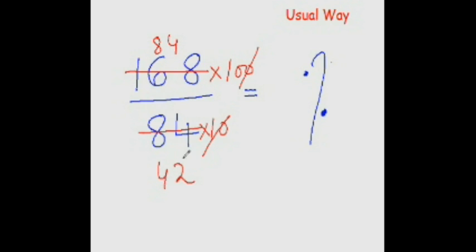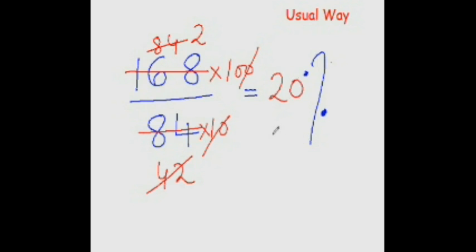Once you spot the relationship, you can cancel and write two there. Two times ten is twenty, so the answer is twenty percent. This method is good, but the problem is it's difficult to do mentally because too many steps are involved. So let's look at the faster way of doing it.